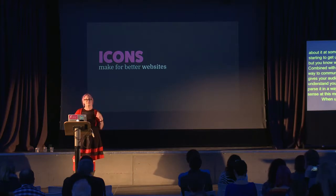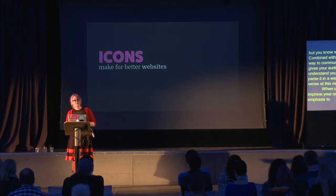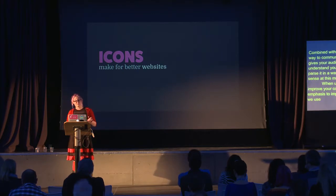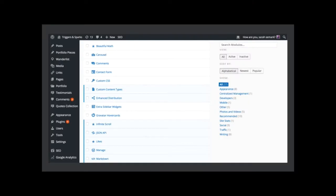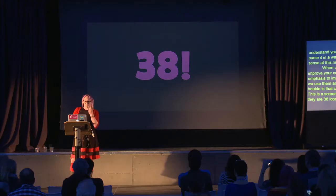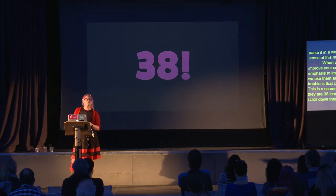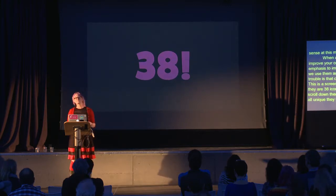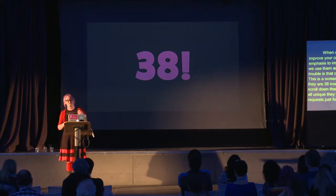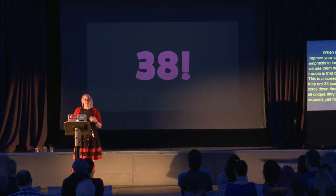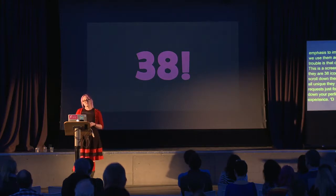When used intelligently, icons can improve your communication and give emphasis to important information. As a result, we use them an awful lot on websites. The trouble is that can often mean a lot of images. This is a screenshot of my WordPress admin — there are 38 icons on that screen alone, and if you scroll down there's actually more. If those were all unique images, that would be 38-plus HTTP requests just for those images, which can really slow down performance and lead to a bad experience. So if we want to use icons, we need a way to combine them into a single file.